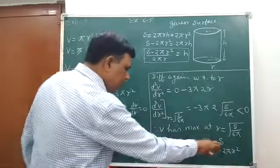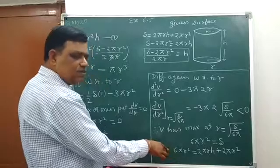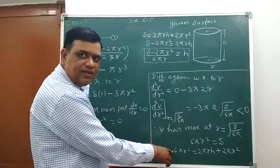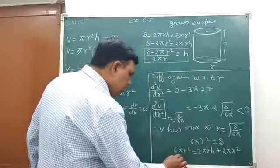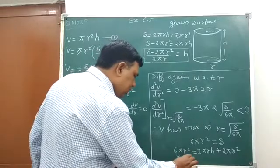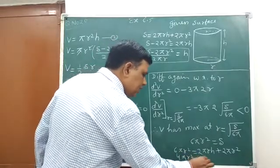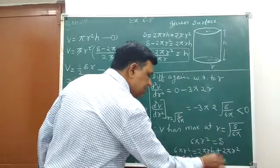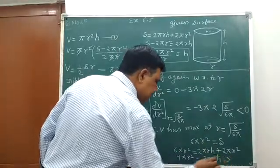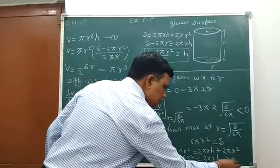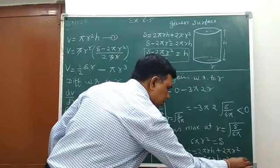By simplifying, 2πr² is transferred to left side, 6πr² minus 2πr² gives 4πr² equals 2πrh. By solving we will get 2r equals h.